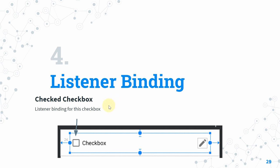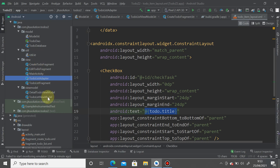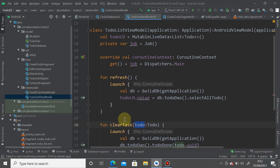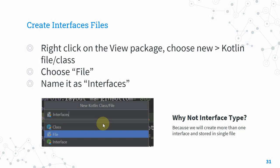Now let's implement listener binding for the checkbox check-change event. In the original version, a CheckedChangeListener was applied in the adapter with access to the ToDo object. To apply listener binding, we first need to create a custom listener as an interface. Since we'll create multiple interfaces, let's put them all in a single file.